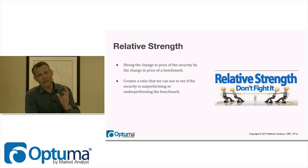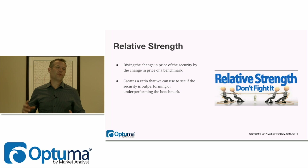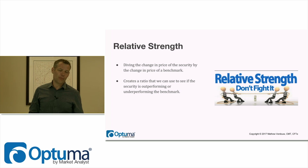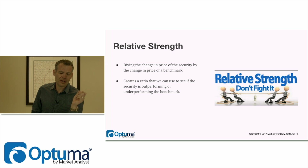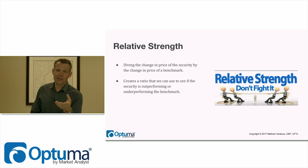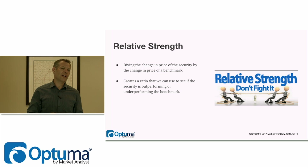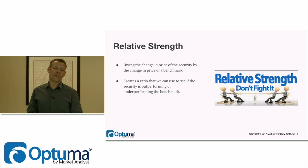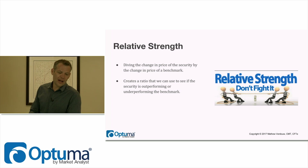Relative strength is driving the change in price by the security. When portfolio managers see that an equity starts to outperform the benchmark, they want that security in their portfolio, which adds to the buying and pushes the price up further — almost like a self-fulfilling prophecy. Basically, we take the price of the security and divide it by a benchmark, say the S&P. We take Microsoft, divide its value by the S&P, and we have a ratio line. Like with on-balance volume, the value of that line is meaningless, but the direction is very important — is it going up, going down? Are we seeing divergences and patterns? It creates a ratio to see if the security is outperforming or underperforming the benchmark.